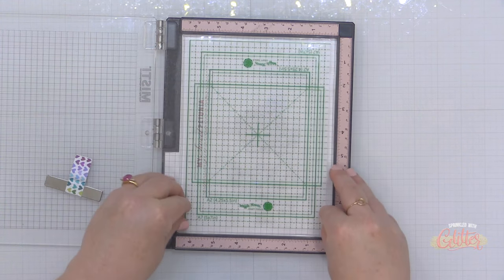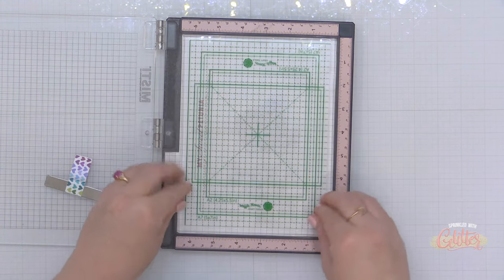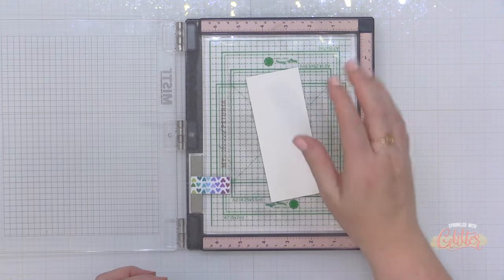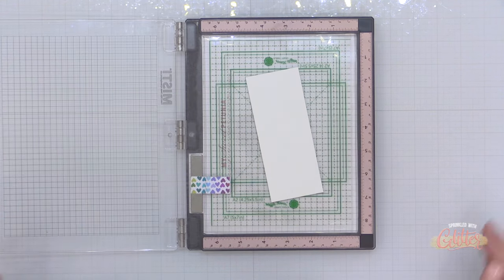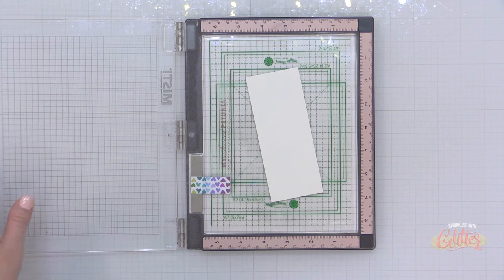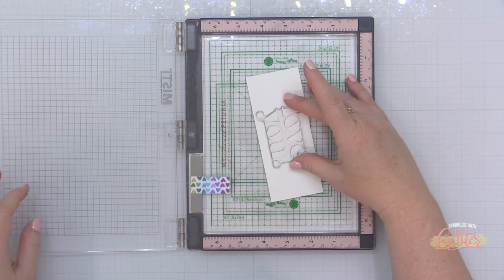Now you can see I can easily remove it from my Misti stamping tool and then when I position it back inside my Misti I just make sure the outer edges are placed and pushed down so that it's gripping the base of the Misti.